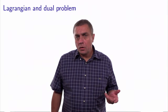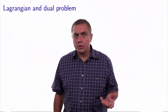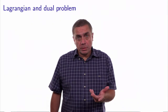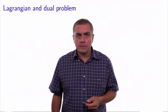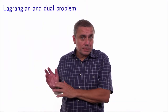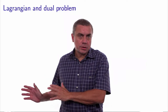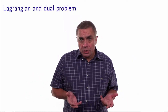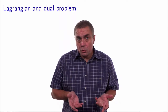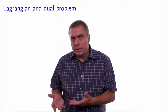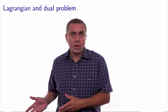We now provide a rigorous definition of the concepts introduced in the previous video using simple examples. The objective function including the penalty terms will be called the Lagrangian. And the identification of the penalty parameters of this Lagrangian to generate the best possible lower bound is called the dual problem.